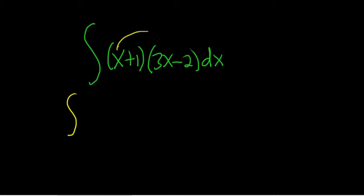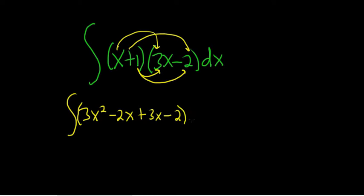So we'll take the x and distribute. So x times 3x is 3x squared, and then x times negative 2 is negative 2x. Then 1 times 3x is 3x, and then 1 times negative 2 is negative 2, parentheses, and then we have the dx.